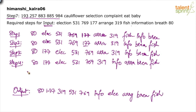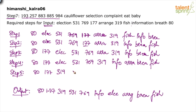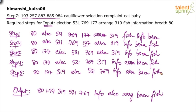One movement has to happen in every step. If something is already fixed, go to the next position and fix that. In step five, fix the next number: 80 and 177 are already placed, so bring 319 next. Copy everything else as it is: election, 531, 769, info, arrange. The process continues alternating between words and numbers until the arrangement is complete.